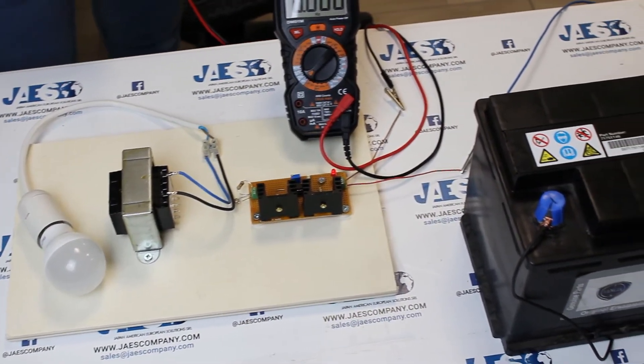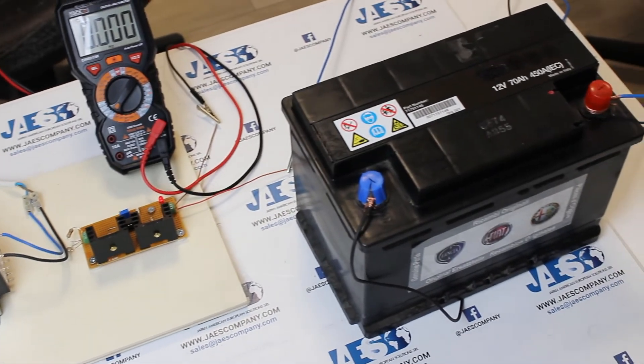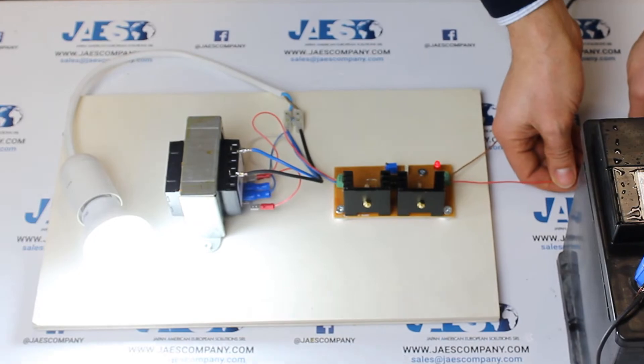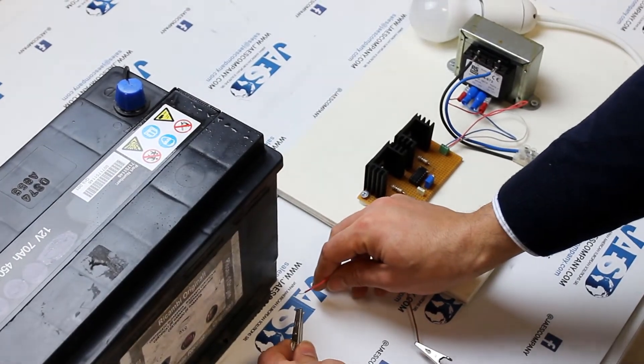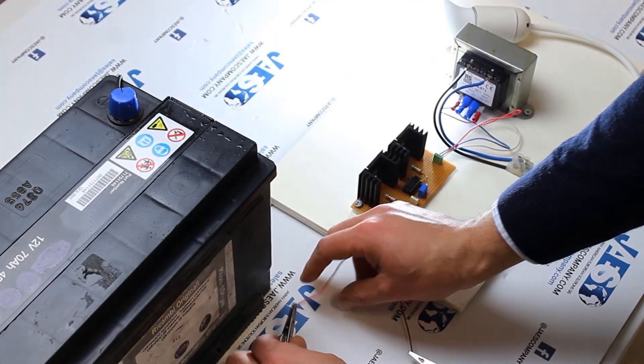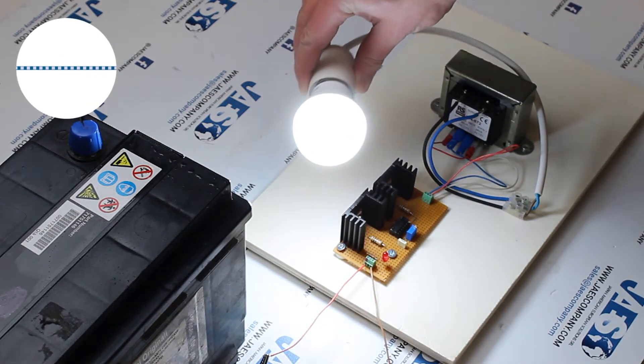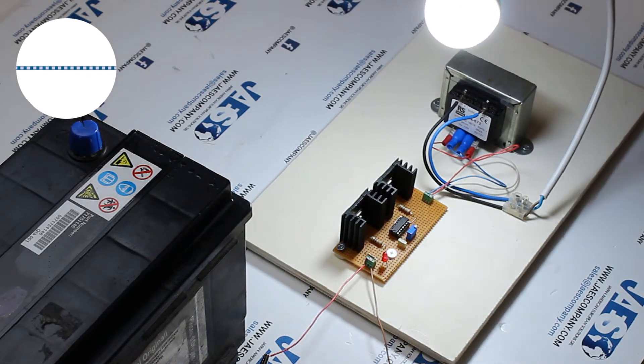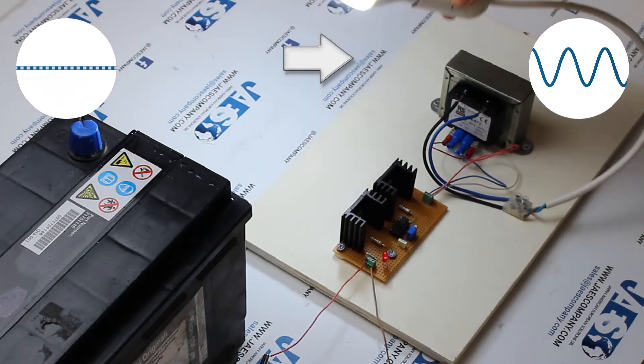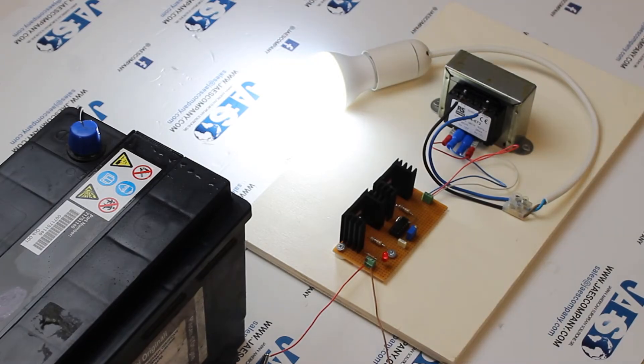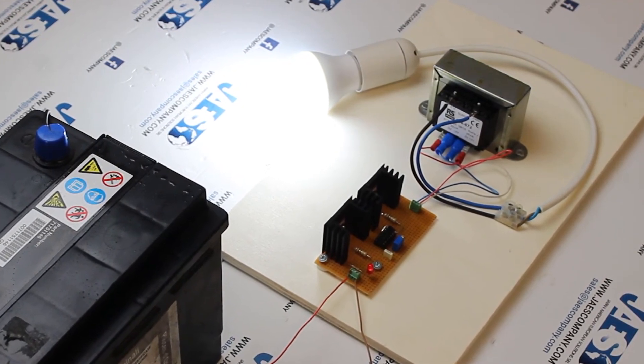Our inverter is ready to be tested. By connecting our circuit to the battery, the light turns on. All this means that the continuous current of the battery flowing inside the circuit and through the transformer is converted into alternating current. The alternating current in output illuminates our light bulb.